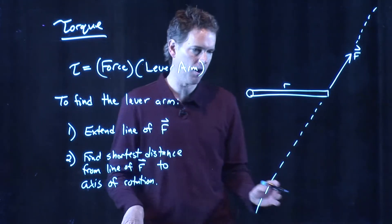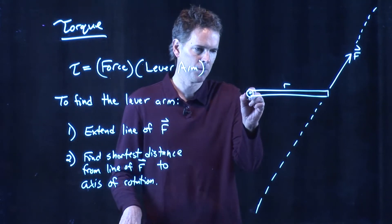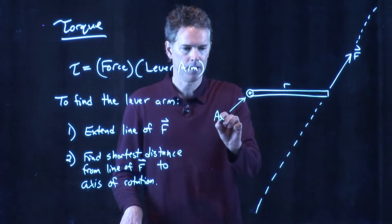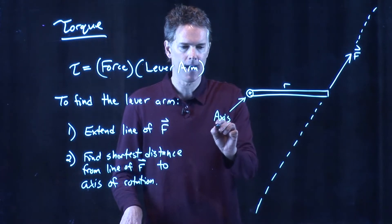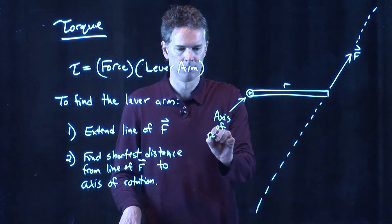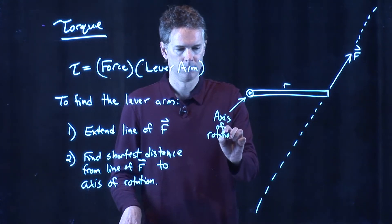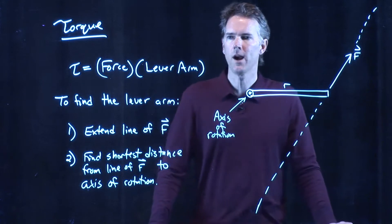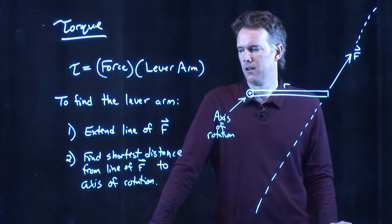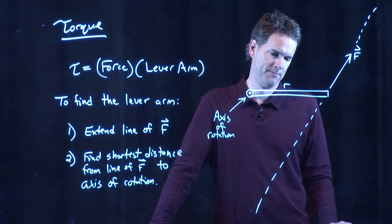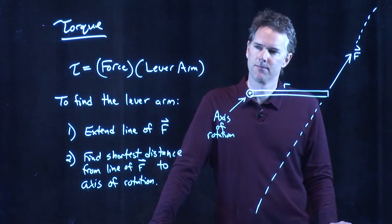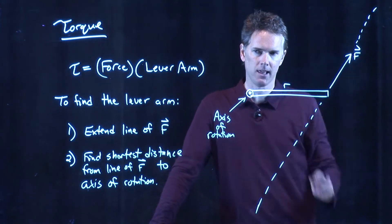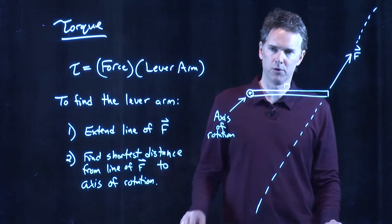Find the shortest distance from that line of force to the axis of rotation. So we need to know where our axis of rotation is. In our picture, that was the hinge — so that is clearly our axis of rotation. So now, where should I draw that lever arm? Where is the shortest distance from that line to the axis of rotation?